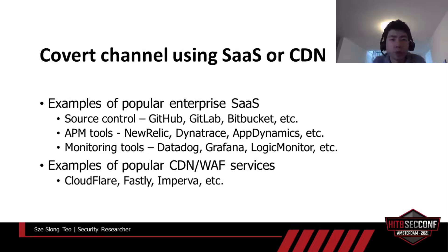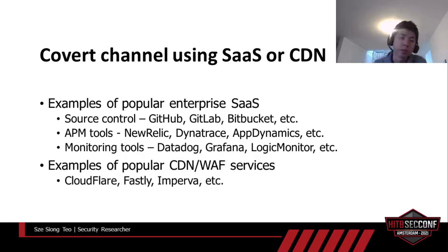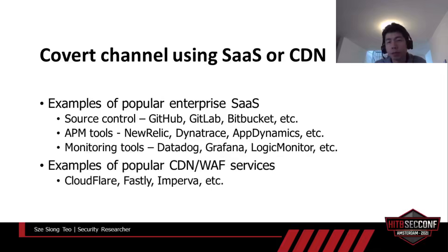We've briefly covered how DNS tunneling, IDS, and SIEM work. Now we'll take a look at an improved technique for the covert channel using popular cloud services to evade detection. Most organizations today use some sort of cloud services like GitHub, New Relic, Cloudflare, and so on.